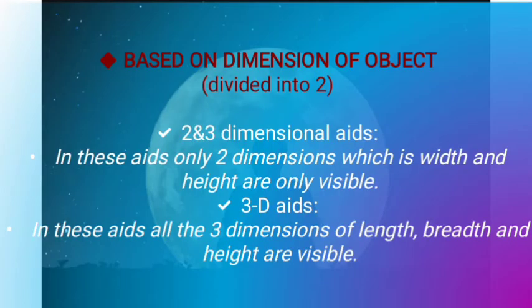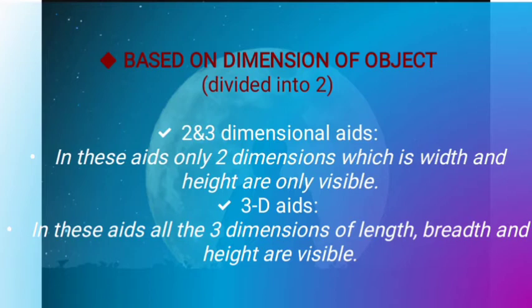Let's move forward to the classification based on dimensions of objects, divided into two parts: two-dimensional and three-dimensional aids. In 2D aids, only two dimensions — width and height — are visible. Examples are charts, graphs, maps, pictographs, and boards of different types. In 3D aids, all three dimensions — length, breadth, and height — are visible. Examples are models, globes, objects, mock-ups, specimens, and puppets.